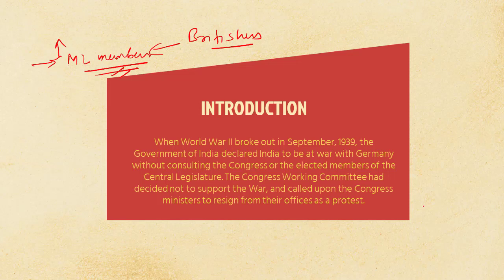The reason behind the resignation of Congress leaders was that the Governor General, Lord Linlithgow, declared India's participation in the World War without even asking or consulting the Congress leaders. This made them upset and because of that they resigned from their posts as a sign of protest. One implication was that the dependence of the British on Muslim League members increased because the Muslim League members did not resign.